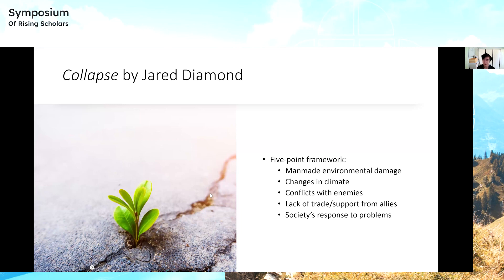An alternate perspective is proposed by Jared Diamond in his book Collapse. He covers the idea of decline from a very environmental perspective. He argues that the primary cause of civilizational decline is how we handle the environment and deal with nature around us. He proposes a five-point framework. Some factors he acknowledges are beyond humanity's control, such as changes in climate, but others we can control, like man-made environmental damage, conflicts with enemies, and — probably most important — how we respond to these natural problems. This is very different from the previous theory.